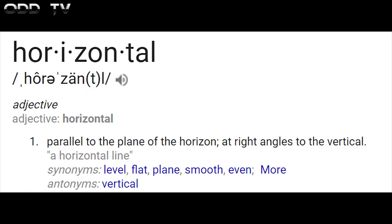Did you know that the word horizon stems from horizontal? The definition of horizontal is as follows: parallel to the plane of the horizon, at right angles to the vertical. Synonyms: level, flat, plain, smooth, even. It's called a horizon, not a curve-izen.